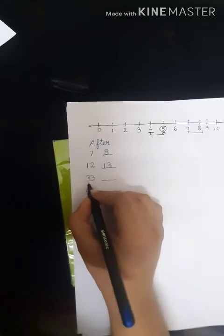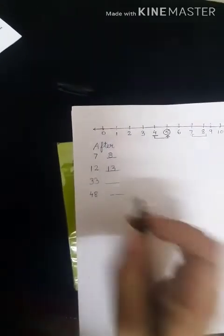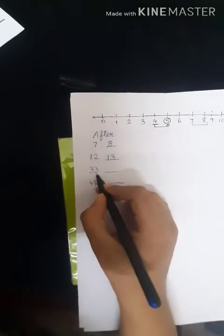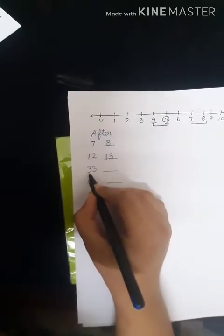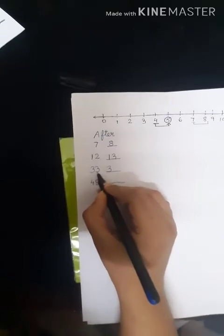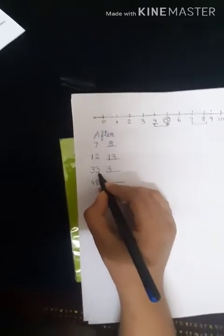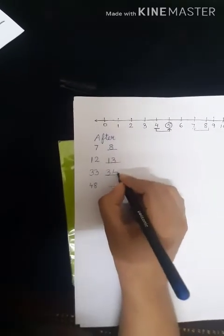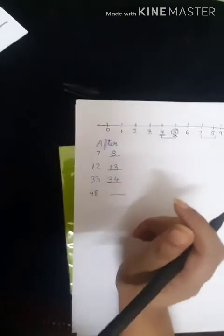Now similarly, let us look at the next one. What number is written over here? 33. So the first digit is 3, so here also we will write 3. Now what comes after 3? 4. So the second digit is going to be 4. So 3, 4, 34.